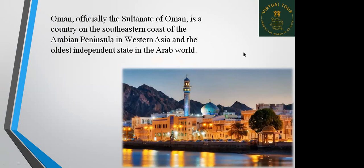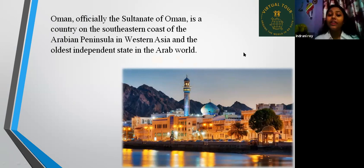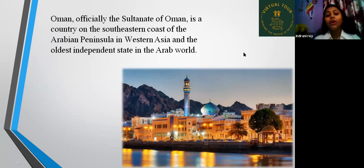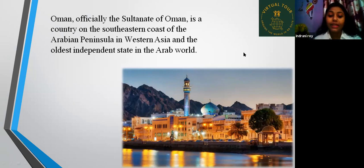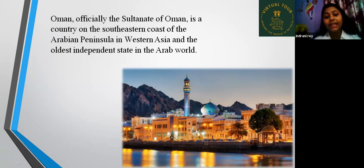Let us know more about Oman. The official name of Oman is the Sultanate of Oman. Oman is a country on the southeastern coast of the Arabian Peninsula in western Asia, and the oldest independent state of the Arab world.